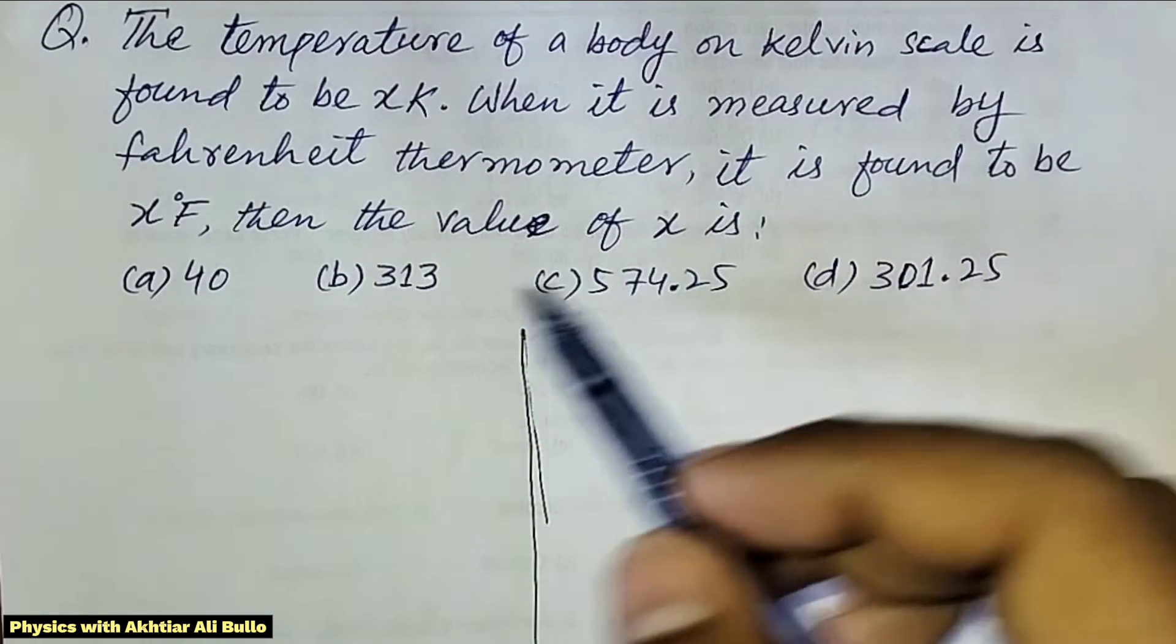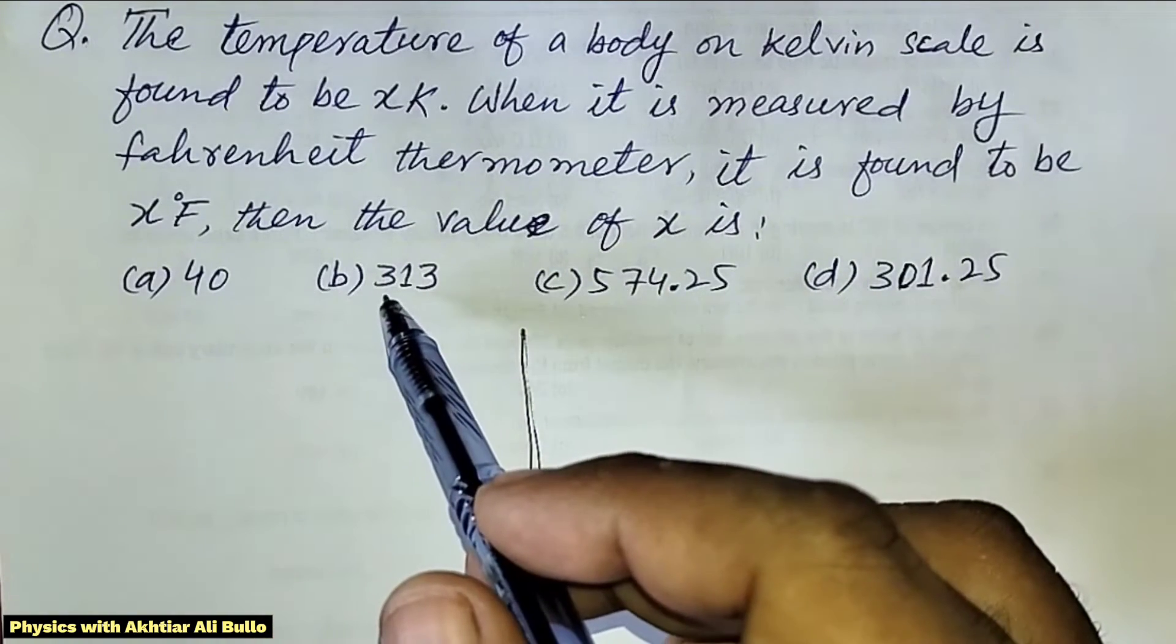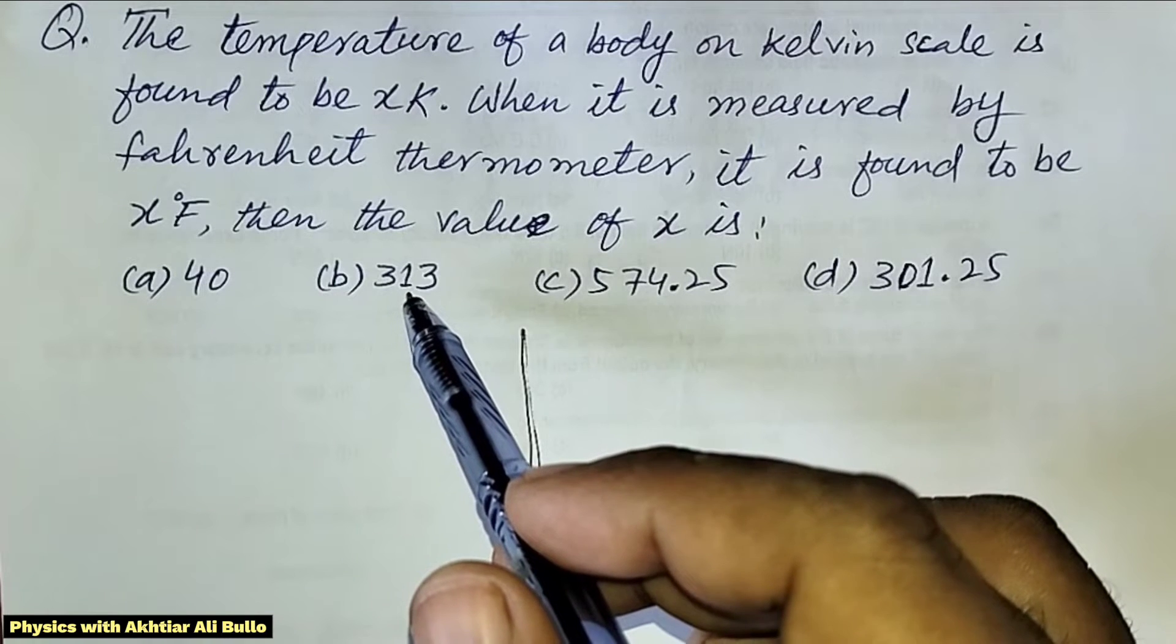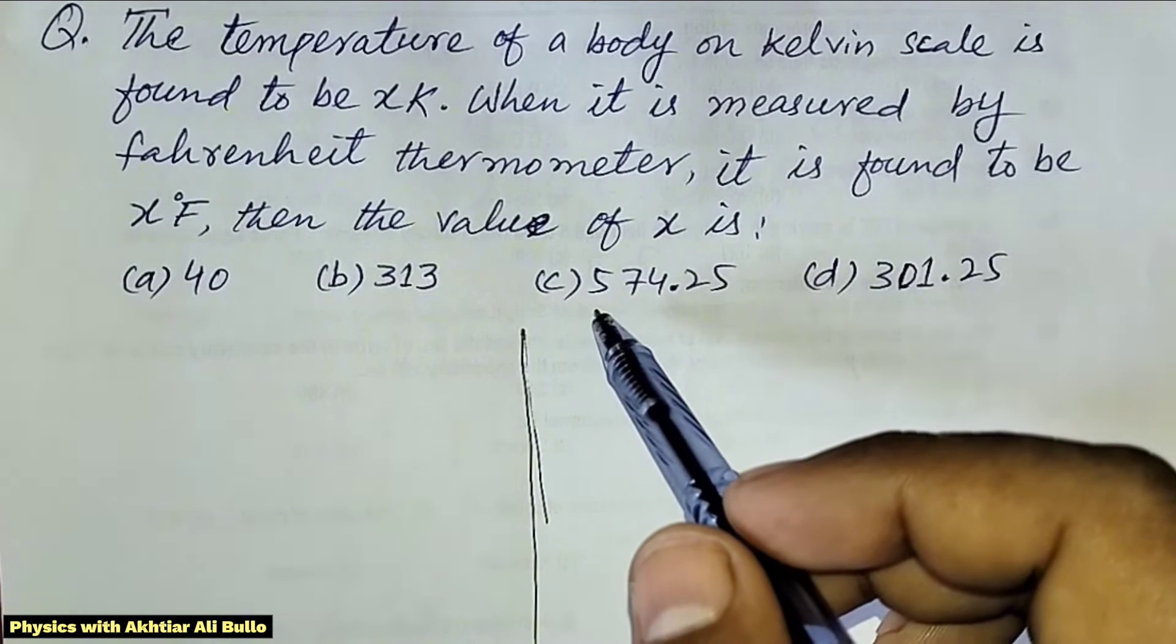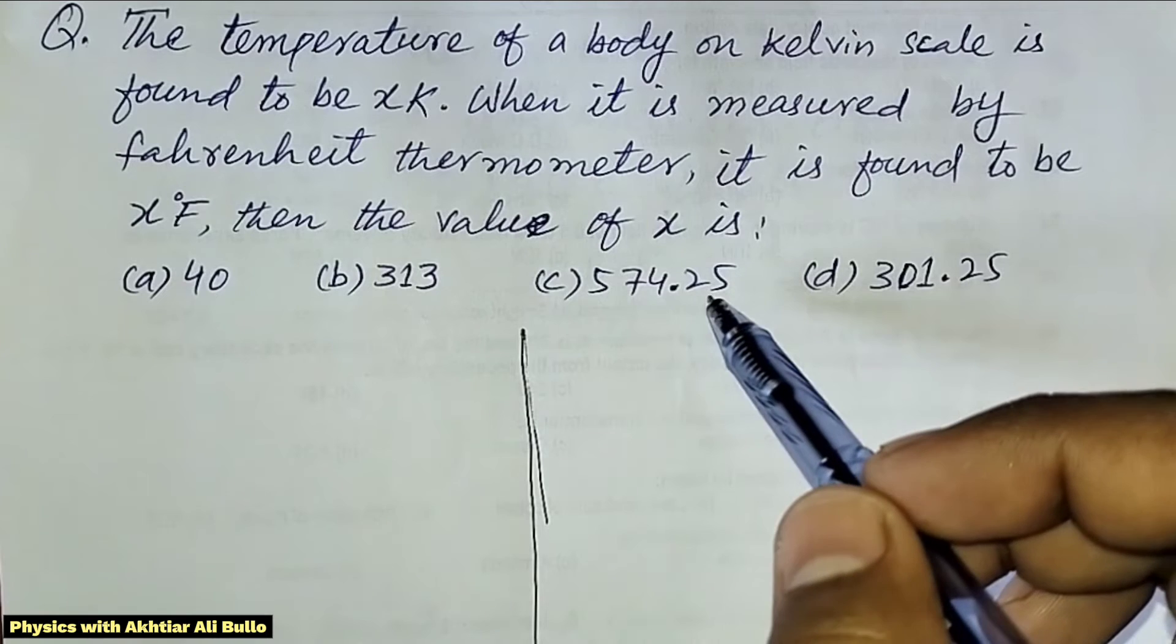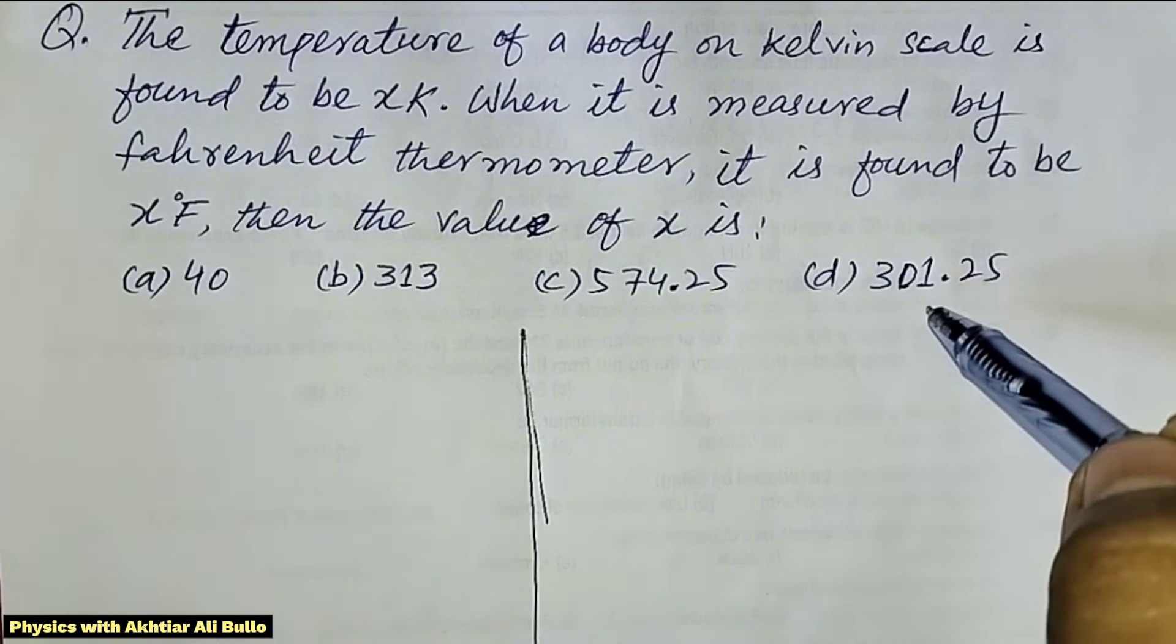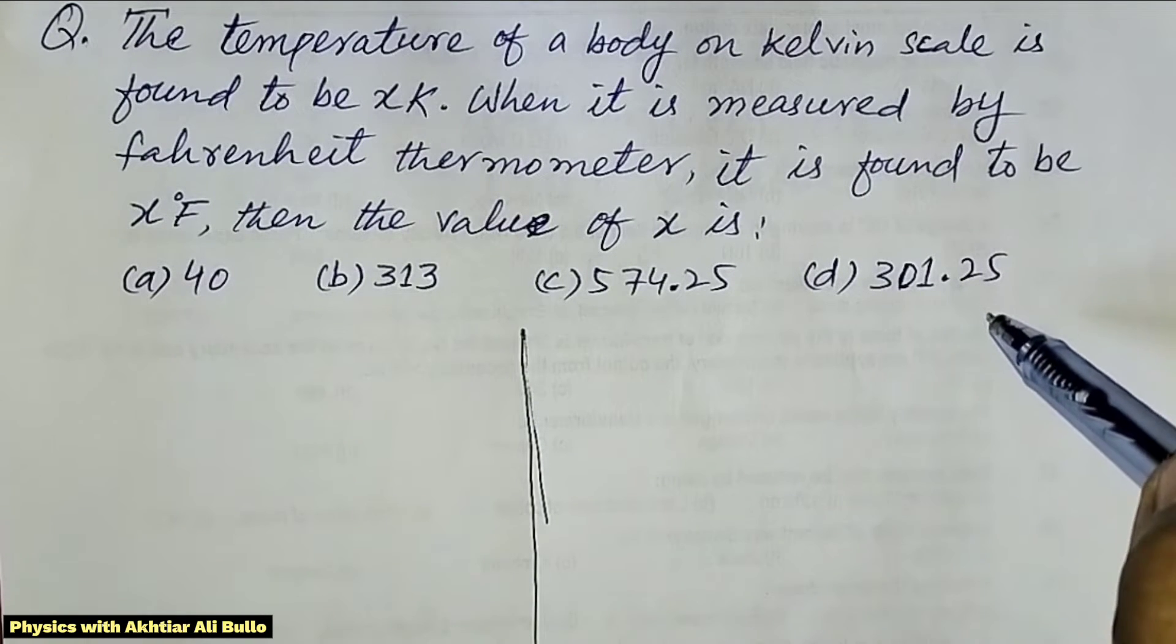Then, the value of x is: (a) 40, (b) 313, (c) 574.25, (d) 301.25.